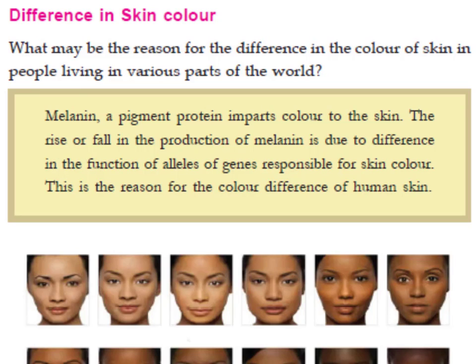We see different skin colors — a darker color, a medium color, and a pure white color. These variations in skin color are found among people around the world.